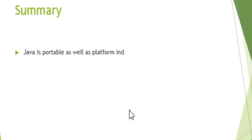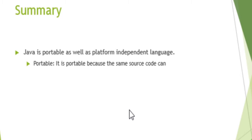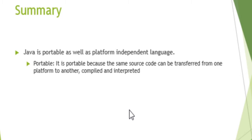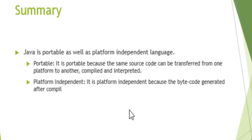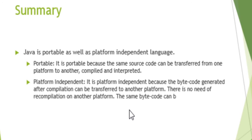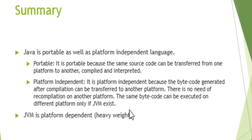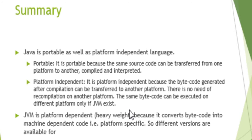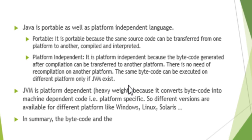In summary, Java is both portable and platform independent. It is portable because the same source code can be transferred from one platform to another, compiled and interpreted. It is platform independent because the bytecode generated after compilation can be transferred to another platform with no need for recompilation — the same bytecode can be executed on different platforms as long as a JVM exists. The JVM is platform-dependent and converts bytecode into machine-specific code, so different JVM versions are available for Windows, Linux, Solaris, and so on. Ultimately, the bytecode and the JVM together make Java a platform independent programming language.